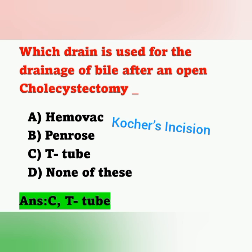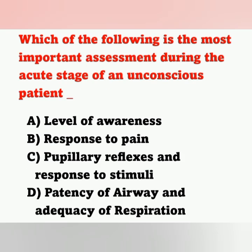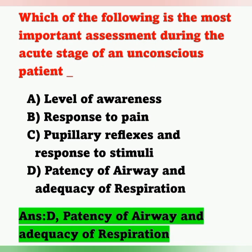Question 5: Which is the most important aspect during the acute stage of an unconscious patient? Options: A) level of awareness, B) response to pain, C) pupillary reflex and response to stimuli, D) patency of airway and adequacy of respiration. The correct answer is option D — assessing patency of airway and adequacy of respiration is the priority.